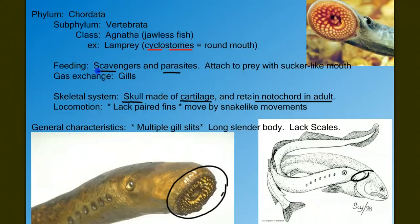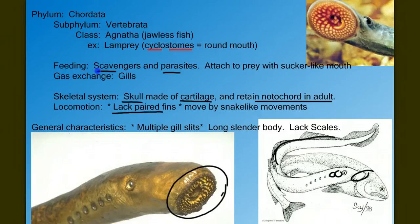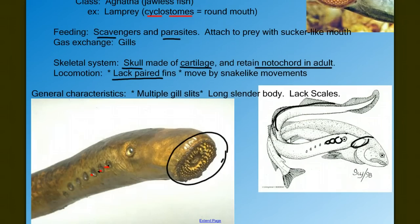The skull is made of cartilage, so it's a very limited skeleton. Another primitive feature is that Agnathans lack paired fins. We see a long dorsal fin and a tail fin, but there are no fins coming off the sides like appendages. They also have multiple gill slits — more than one — which is a primitive feature. We'll see the number of gill slits reduce as we move through the fish.